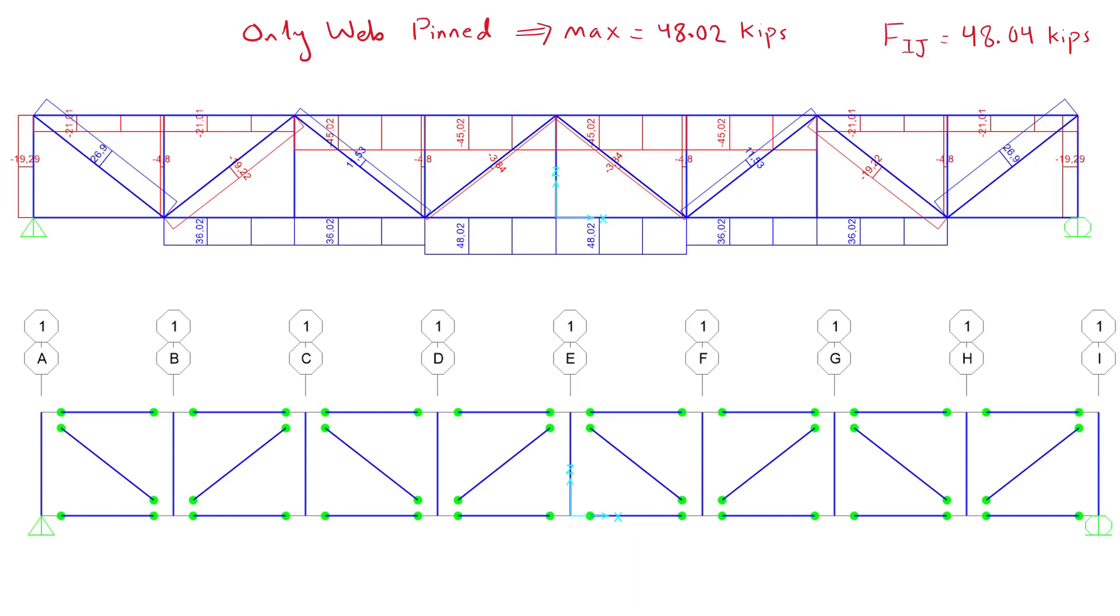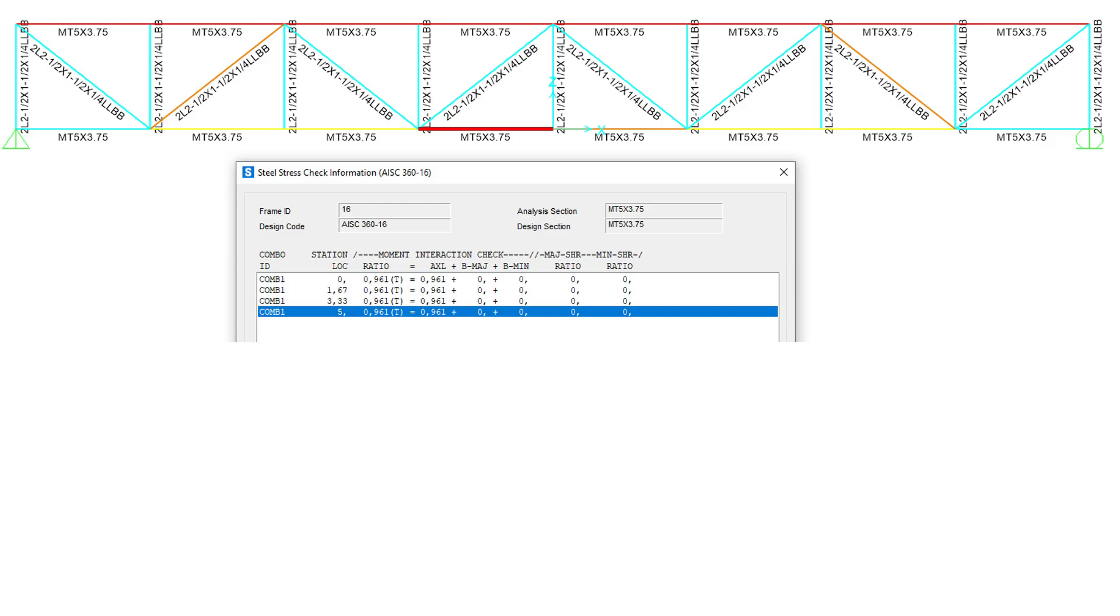Note that regardless of what members we use for the webs, the result will always be the same because this system is statically determinate. Also note that when using the program's built-in design capabilities, the program will determine that the section size MT5 by 3.75 is sufficient when in fact it is not as we have seen previously.